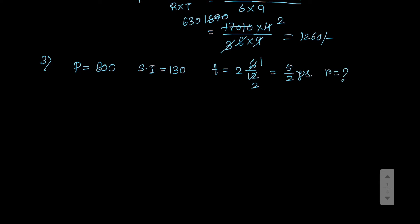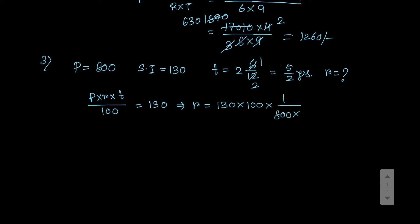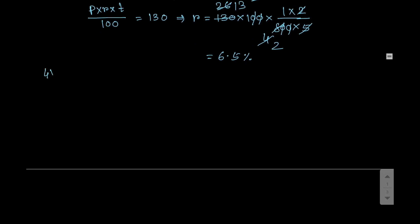We have to find rate R. Using the formula P times R times T divided by 100 equals interest, which is 130. Rearranging: R equals 130 into 100 divided by P into T. Here P equals 800 and T equals 5 by 2, so 5 goes in numerator and 2 in denominator. After cancellation it becomes 13 by 2, that means 6.5. So 6.5 percent is your answer.